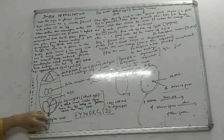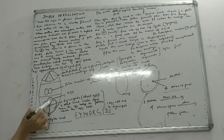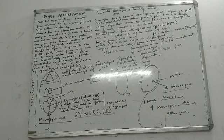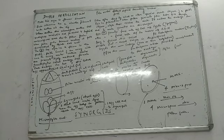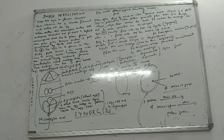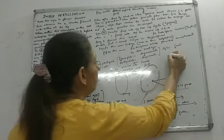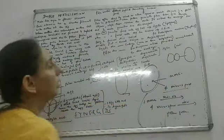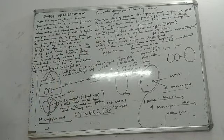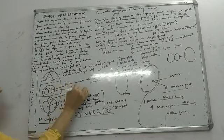The function of synergids is to help the pollen reach the egg. The function of antipodals is nutritional — nourishment to the embryo sac. Now the two polar nuclei will fuse together and form one nucleus known as the diploid secondary nucleus. So when these two polar nuclei combine, what we get is the secondary nucleus, which is diploid.